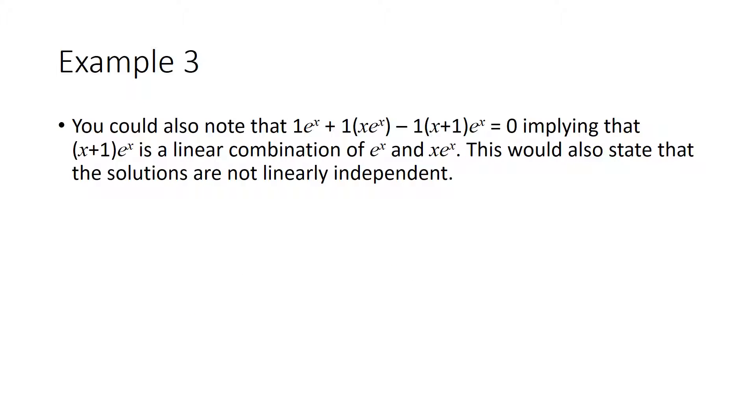You could also note that 1 times e to the x plus 1 times x times e to the x minus 1 times x plus 1 times e to the x equals zero. Implying that x plus 1 times e to the x is a linear combination of e to the x and x times e to the x. And this would also state the solutions are not linearly independent.